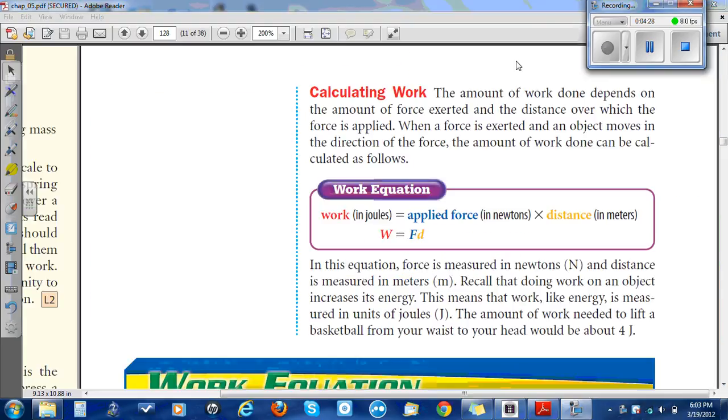Calculating work. The amount of work done depends on the amount of force exerted and the distance over which the force is applied. When a force is exerted and an object moves in the direction of the force, the amount of work done can be calculated as follows. Work in joules equals force, an applied force in newtons times the distance in meters. In this equation, force is measured in newtons and distance is measured in meters. Recall that doing work on an object increases its energy. That means work, like energy, is measured in units of joules. The amount of work needed to lift a basketball from your waist to your head would be about 4 joules.